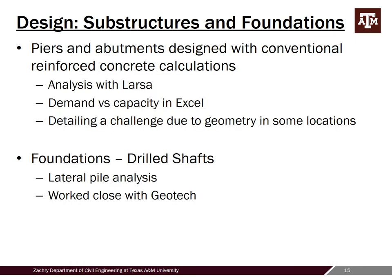Moving on to substructures and foundations: the piers and abutments used conventional reinforced concrete design, just beam columns for the piers. The analysis was done in the model I showed earlier, and all demands were pulled into Excel. Detailing was a bit of a challenge because of the fluted shapes and the interesting geometry where the ramp meets the truss — it's at a very specific angle with different elevations of the truss bridge seat versus the ramp, creating lots of stair steps and corners. But the actual pier design and abutment design were pretty conventional.